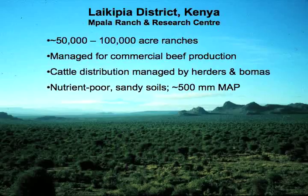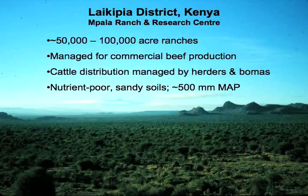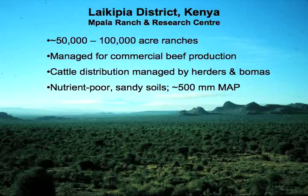Laikipia district in Kenya, in the central portion of the country, is in the rain shadow of Mount Kenya — just like we're in the rain shadow of the Rockies here. It's a fairly large district, all managed for commercial beef production with no national parks or natural areas. This is one of the few areas where, at Independence, most ranches remained in European ownership and still are today. Cattle distribution is managed primarily by herders and through a BOMA system, with about 500 millimeters mean annual precipitation — more similar to far eastern Colorado.